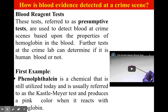There are also many different kinds of blood reagent tests, also called presumptive tests. They're used to detect blood at crime scenes based upon the properties of hemoglobin in the blood. Hemoglobin is the protein in the blood that carries oxygen so that all of our cells get the oxygen they need to survive. Further tests at the crime lab can also determine if the blood is human or not.